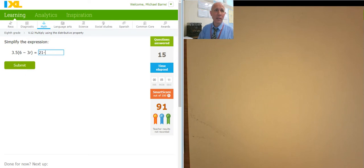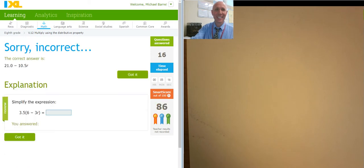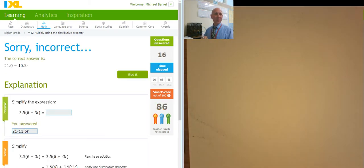I know I did that really fast. Let's see if that's right. Oh, what was my answer? You answered 21 minus 11.5R. Oh, it's 10.5R. Well, challenge zone.